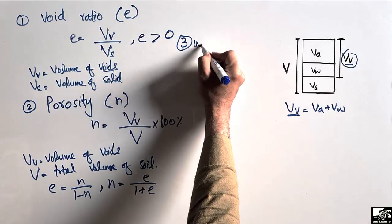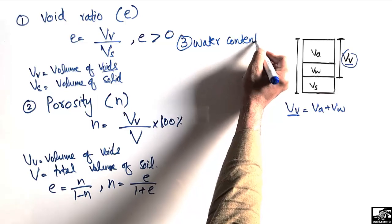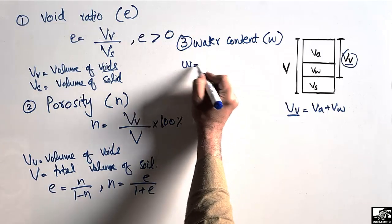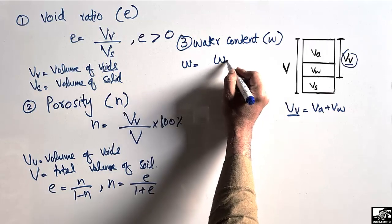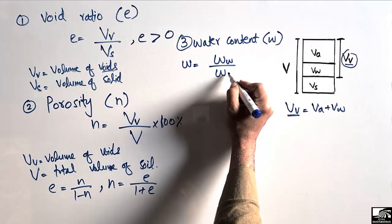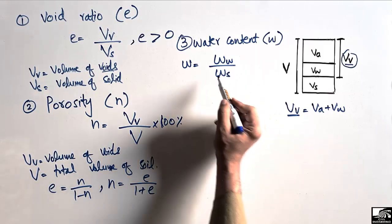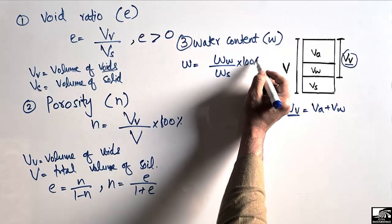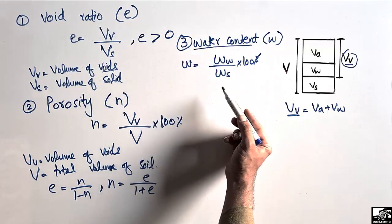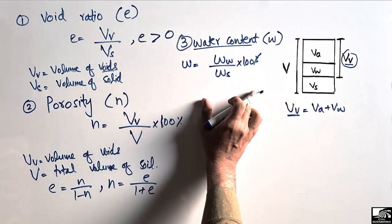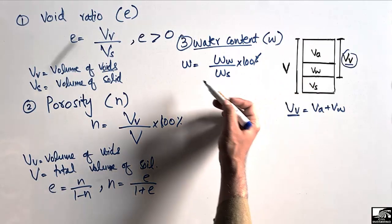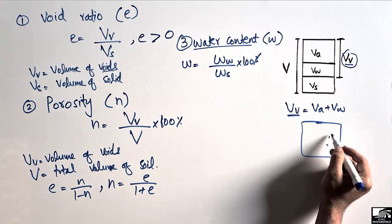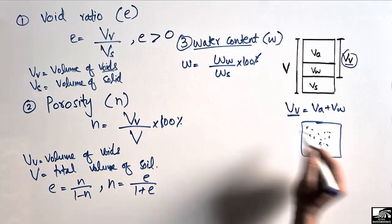The third topic is water content, also called moisture content, and it is usually represented by small w. The water content equals the ratio of the weight of water divided by the weight of the soil solids, multiplied by 100 percent. Note that this is a ratio of weights, not volumes. To illustrate this, let's take a soil mass where Ws is the weight of the soil solids and Ww is the weight of water.